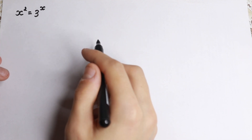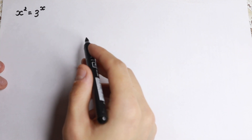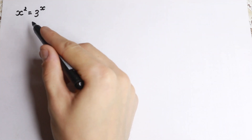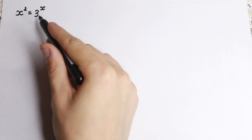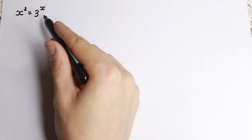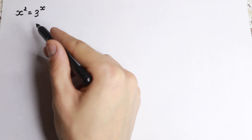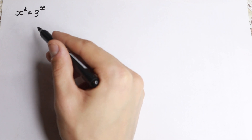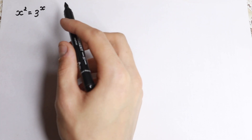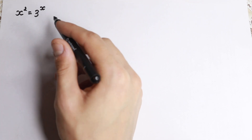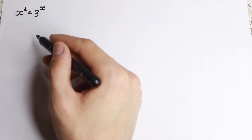Hello everyone! Happy to see you here. We have a really interesting exponential equation today: x squared equals 3 to the x. On the first look this equation seems easy because we have x squared on the left and 3 to the x on the right, no huge numbers. We can solve it, but we need to know some really interesting tricks and theorems, which I'm going to show you right now.